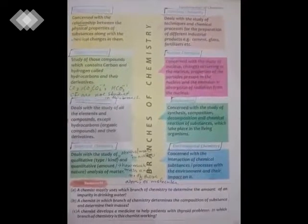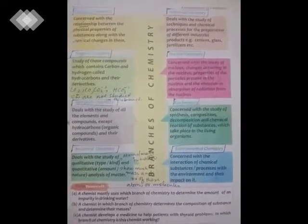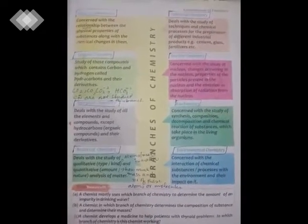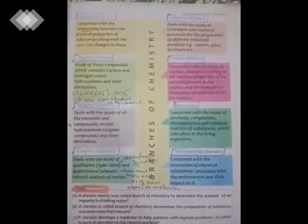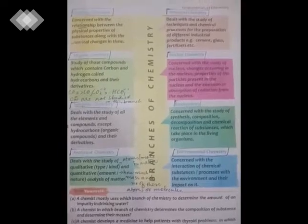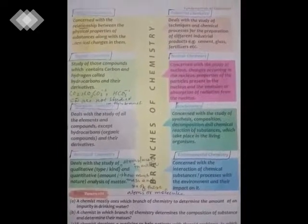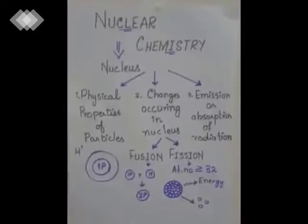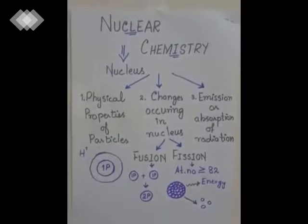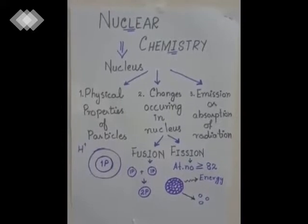After industrial chemistry, we discuss the next branch: nuclear chemistry. Nuclear chemistry is concerned with the study of changes occurring in the nucleus, properties of particles present in the nucleus, and the emission or absorption of radiation from the nucleus. The word 'nuclear' is derived from 'nucleus,' meaning we study about the nucleus in this branch.